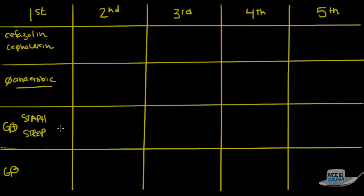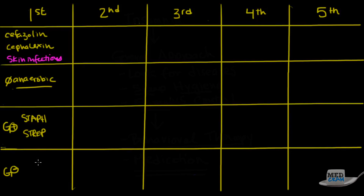Where do we see first generation cephalosporins being used? We see them used in skin infections, because they have really good gram-positive coverage — no anaerobic coverage, good staph and strep. In terms of gram-negative coverage, they would still take care of your regular gram-negatives like E. coli, Proteus, and Klebsiella.